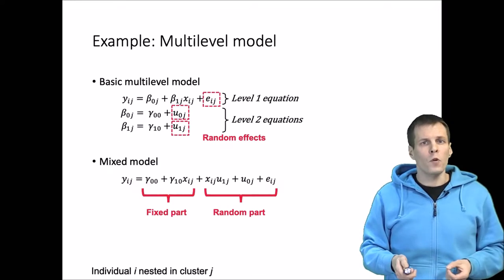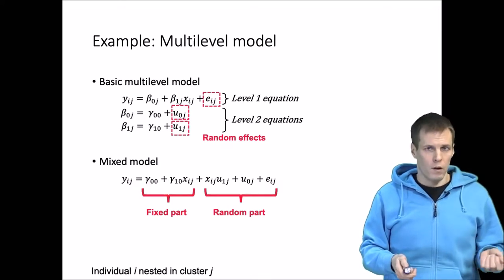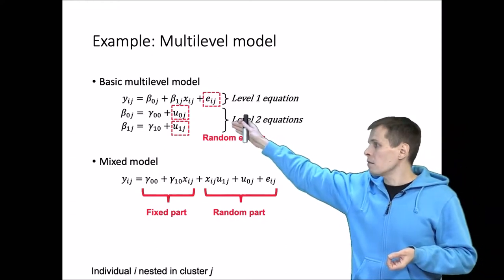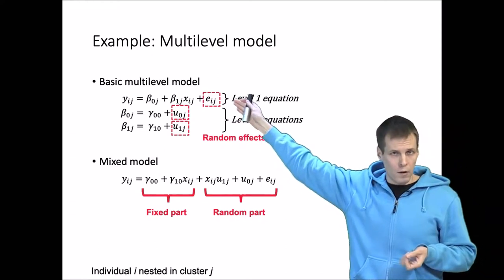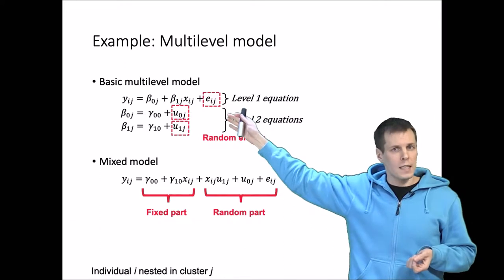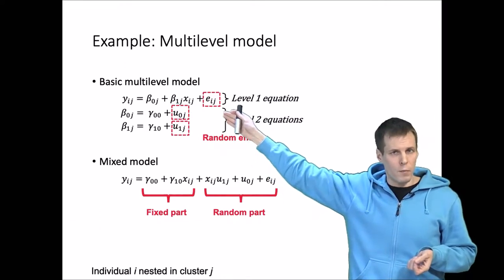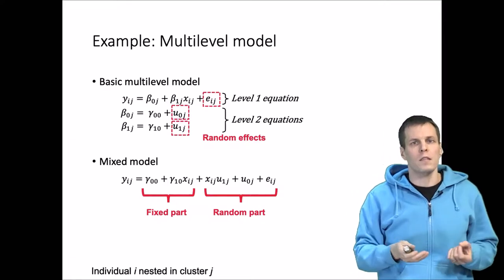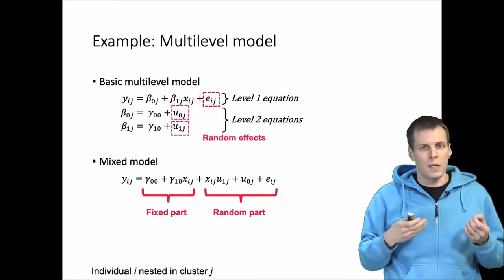Another useful latent variable model is the multi-level model. In this model, we have three latent variables: the error term, and then we have these level-two effects—the random intercept and the random slope. They are latent variables. We estimate their variances but we don't estimate specific case values.